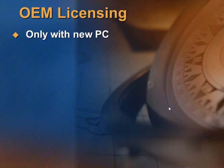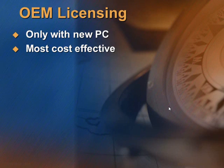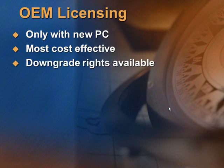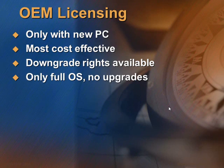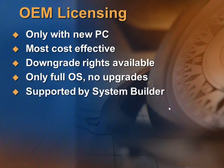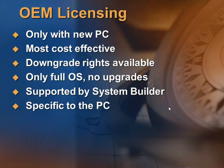Next, we come to OEM Licensing. This is the most cost-effective way to purchase standard software. But please note that this can only be used on a new PC. And if you purchase Office 2010 Professional OEM, you can install Office 2007 Professional OEM. So OEM license does give you downgrade rights.